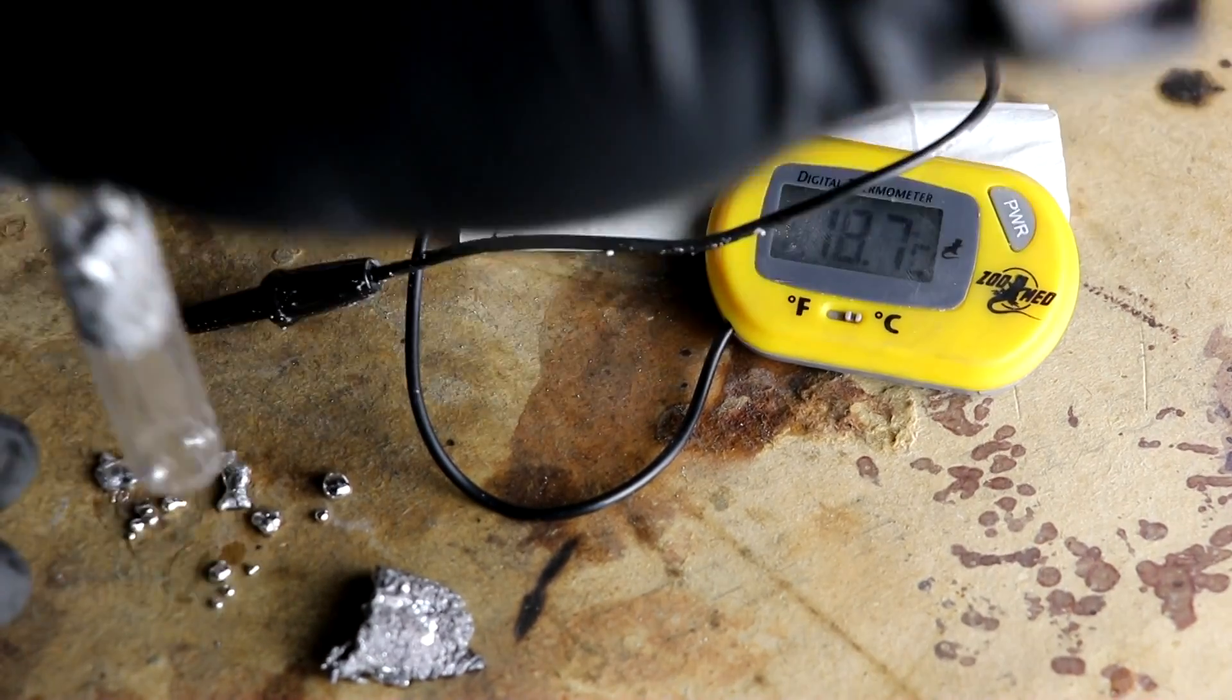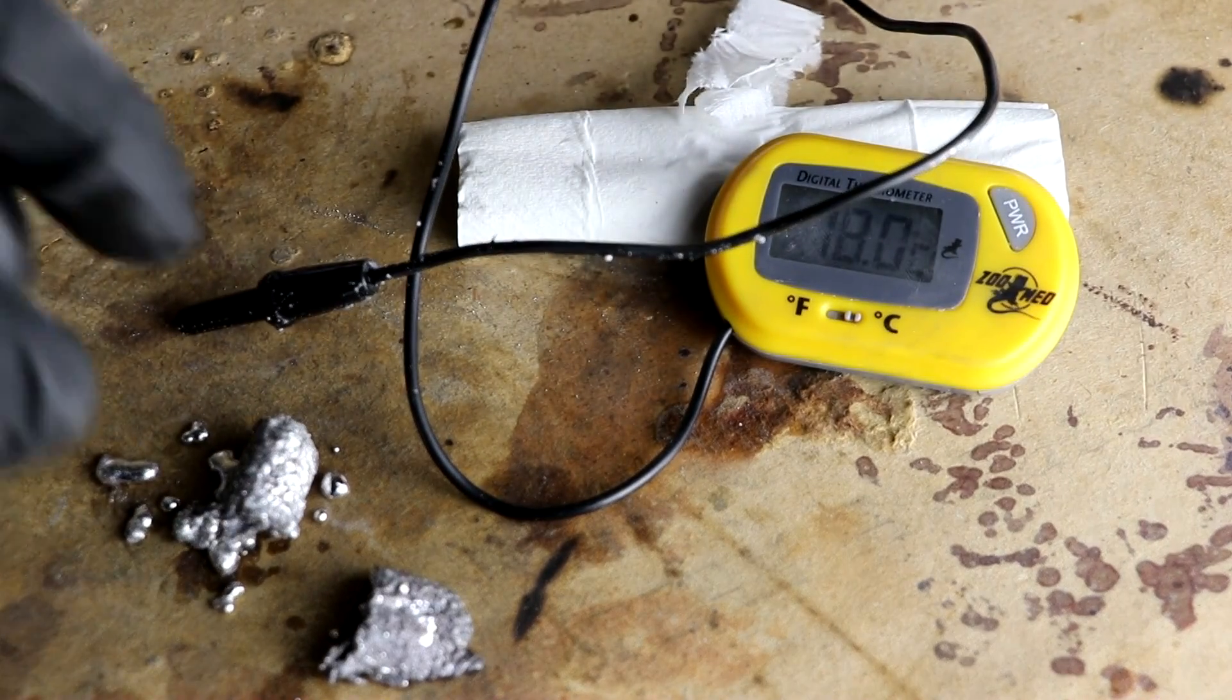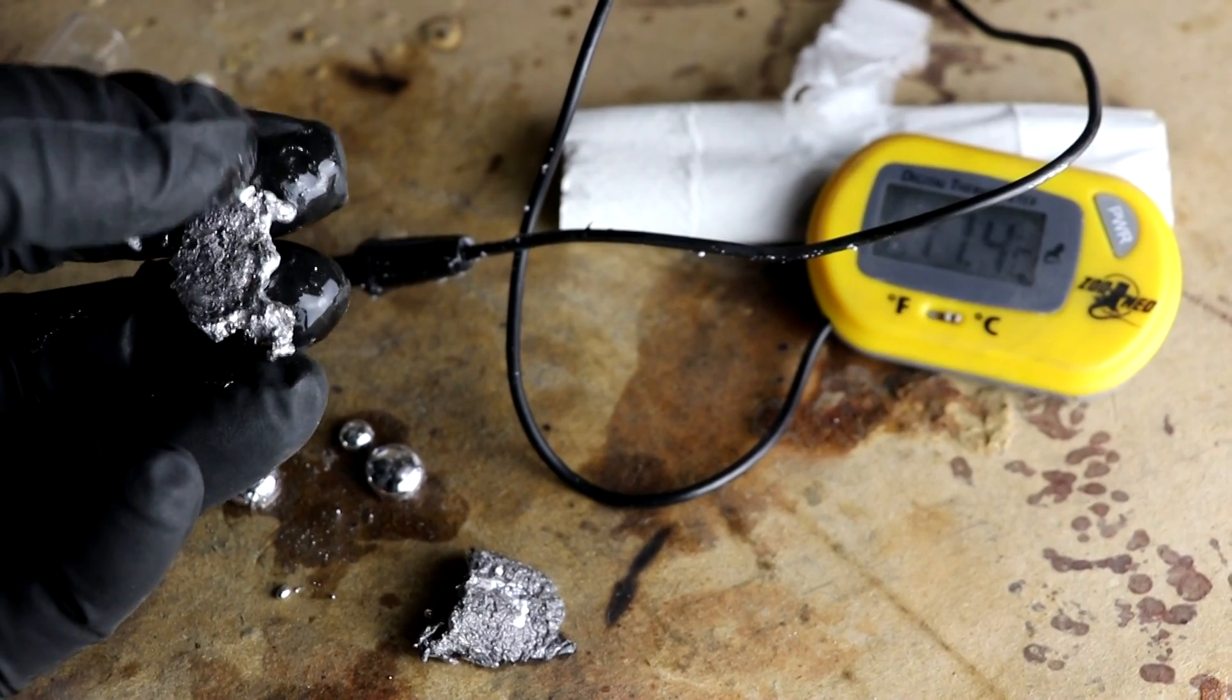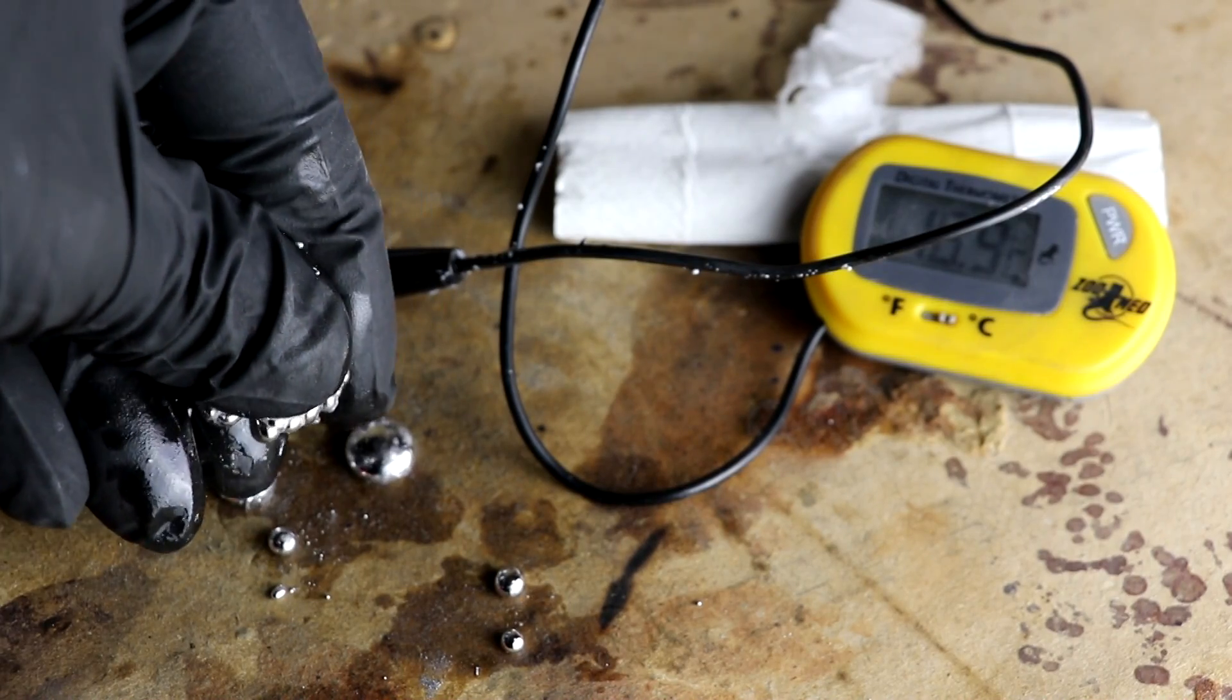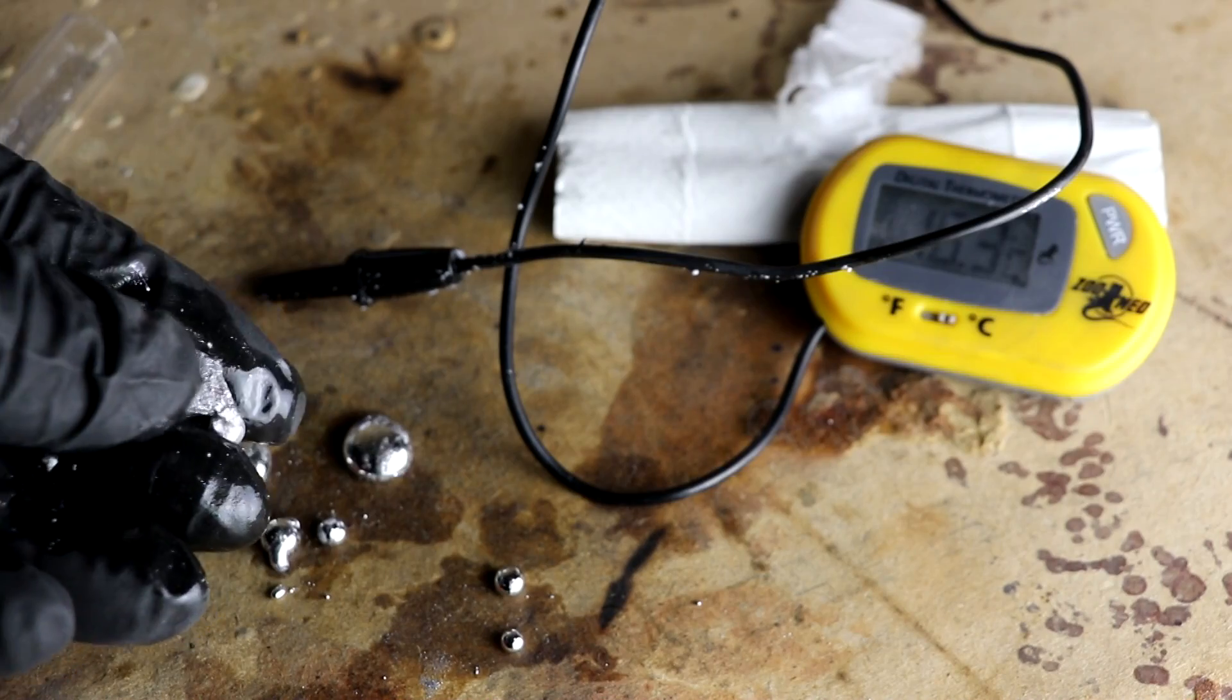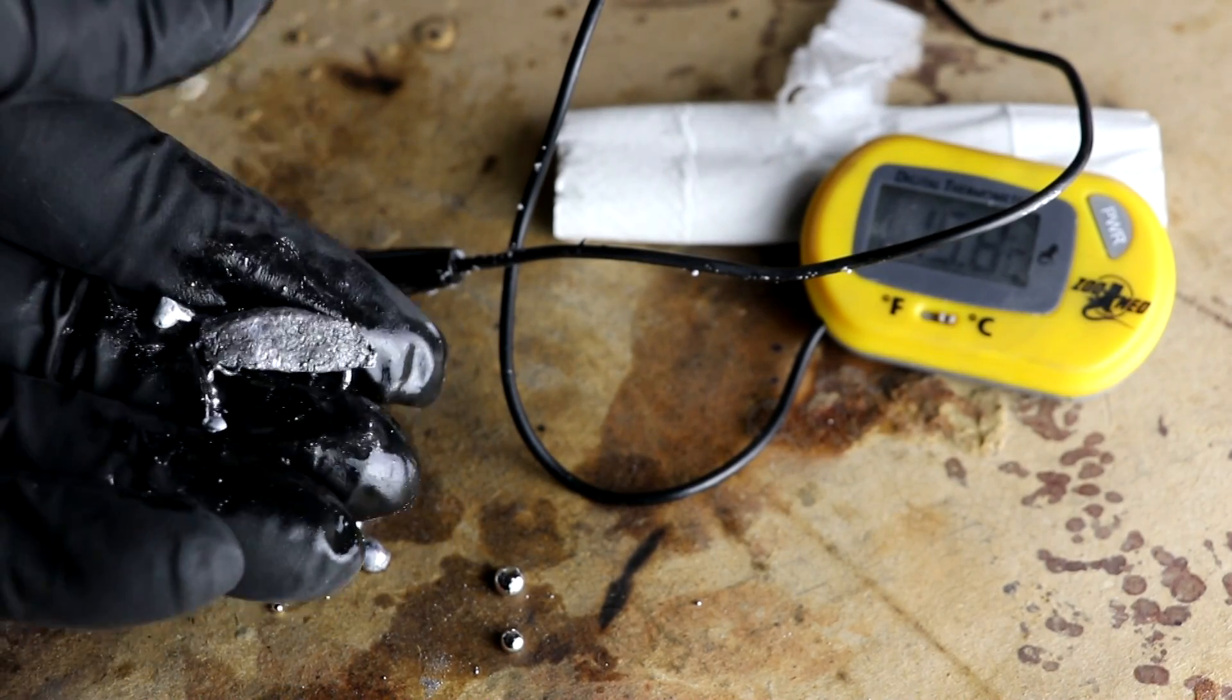See if we can get this sodium potassium out of there. There we go. I should be able to actually give this a squeeze and squeeze out that metal. So yeah, I'm squeezing out the gallinstan and I'm retaining whatever it is that is reacted. So it's probably a gallium, sodium and potassium alloy here which is not liquid.